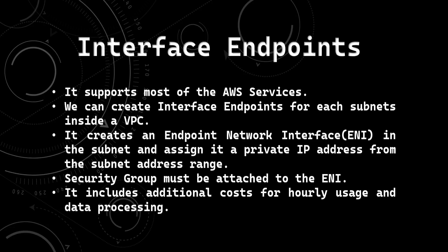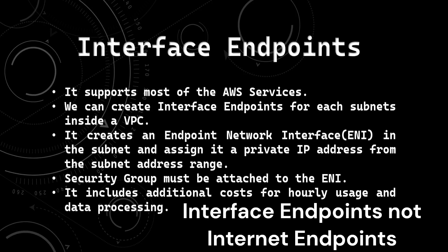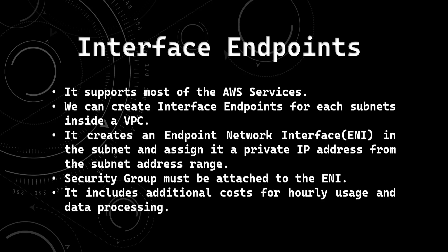Two types of VPC endpoints are there. First one is interface endpoints, and the second one is gateway endpoints. Let's discuss about interface endpoints first. It supports most of the AWS services — meaning using interface endpoints, we can connect to most of the AWS services using a private network.